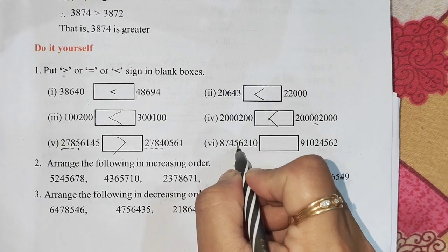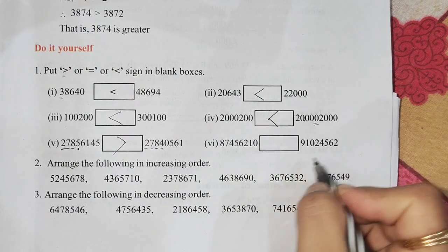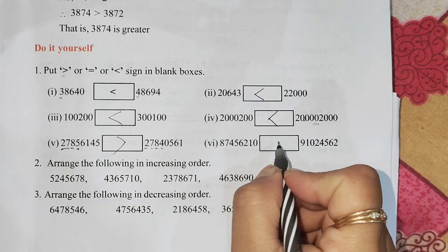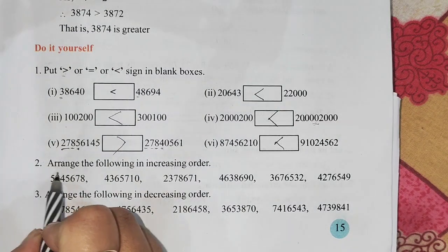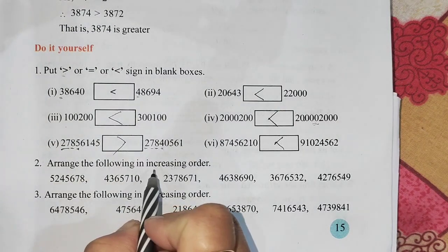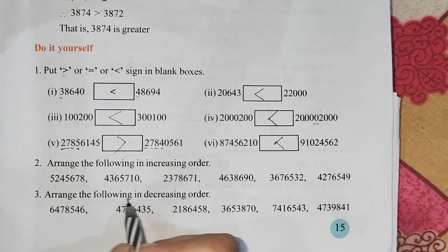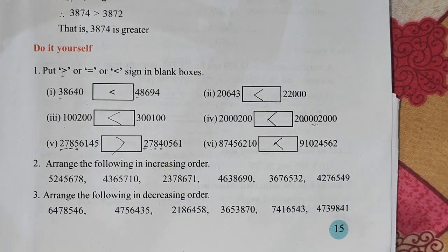Number 6: arrange the following in ascending order. This is what you see here. Good job. This is what to do.